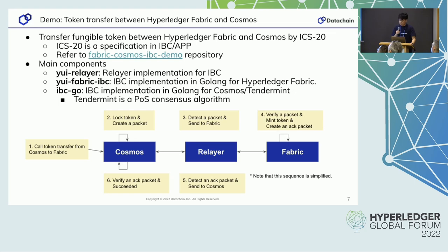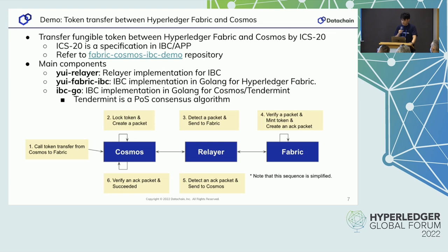Let me describe the demo scenario. It's assumed that a token will be sent from Cosmos to Fabric. At first, the sender initiates a token transfer on the Cosmos side and the existing token is locked. Next, the YUI relayer relays the packet to the Fabric side — I skip updating the light client at this time for simplicity. If a receiver receives the packet on the Fabric side, a new token is minted equivalent to the locked one. Finally, the receiver responds with an acknowledgement packet and the sender accepts it on the Cosmos side.